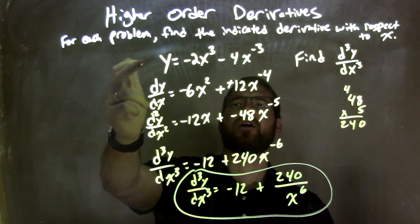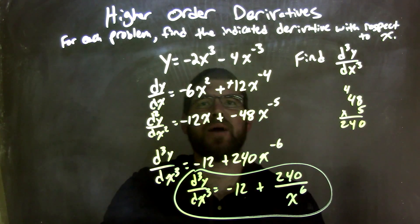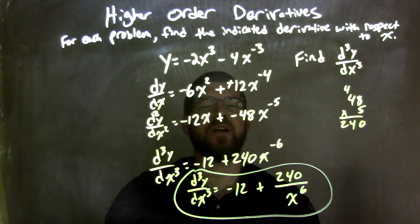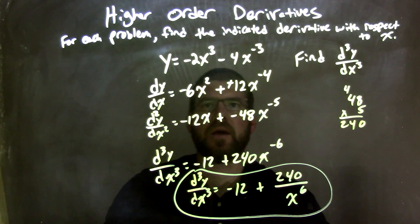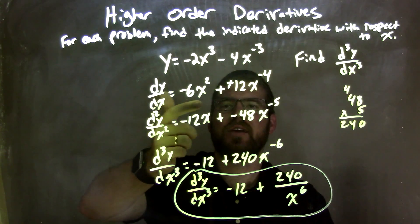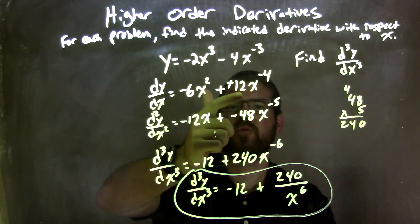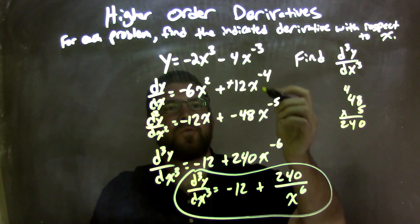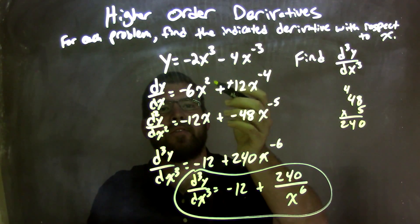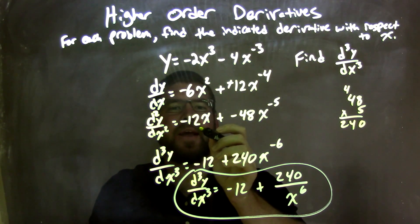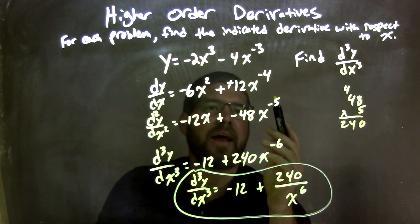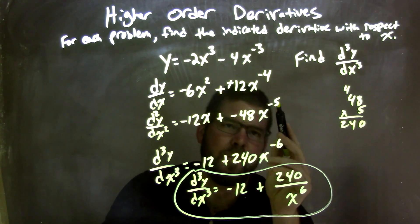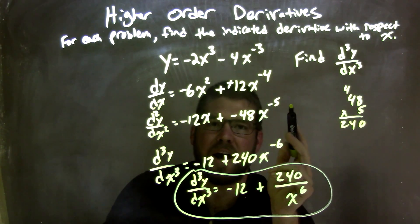Let's recap. We're given y equals negative 2x to the third minus 4x to the negative 3rd power, and we need to find the third derivative. Using the power rule, I get negative 6x squared plus positive 12x to the negative 4th. Then applying the power rule again for the second derivative: the 2 came down multiplied by negative 6, giving negative 12x, and the negative 4 came down multiplied by 12, giving negative 48x to the negative 5th.